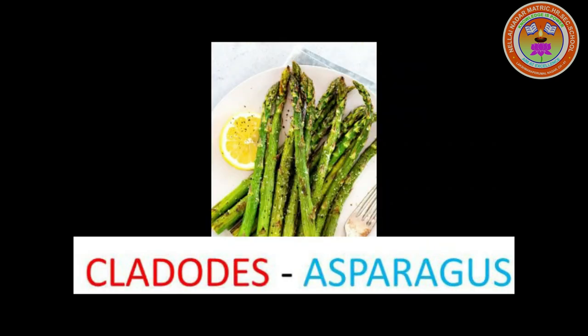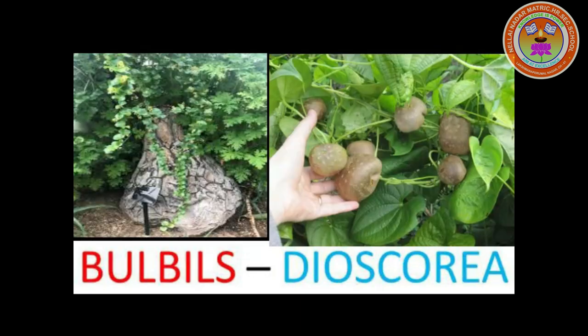Next one is cladodes. It is a type of phylloclade which consists of only one internode. These are cylindrical but not fleshy. These help in photosynthesis. Example: Asparagus. Next one is Bulbils. These are modified axillary vegetative or floral buds meant for food storage. They undergo vegetative propagation to form a new plant. Example: Dioscorea. In this, the bulbils are condensed axillary buds.